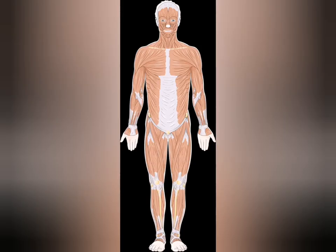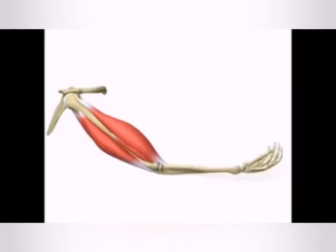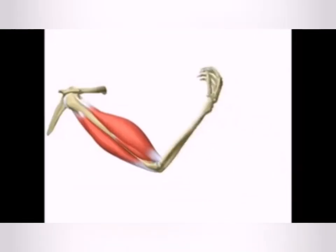There are more than 600 muscles in our body. Muscles are very elastic and flexible, which means they can contract and expand.